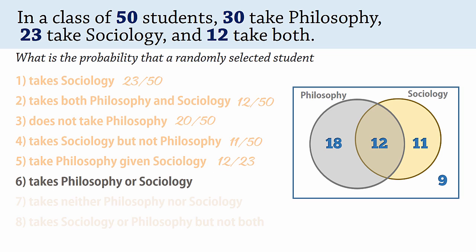For number 6, philosophy or sociology means the union of the two events, and that represents students that take philosophy or sociology or both. We can then use the addition rule, or simply add these 3 values and then divide by 50. Adding the 3 values gives 41, so the probability is 41 divided by 50, giving 0.82.